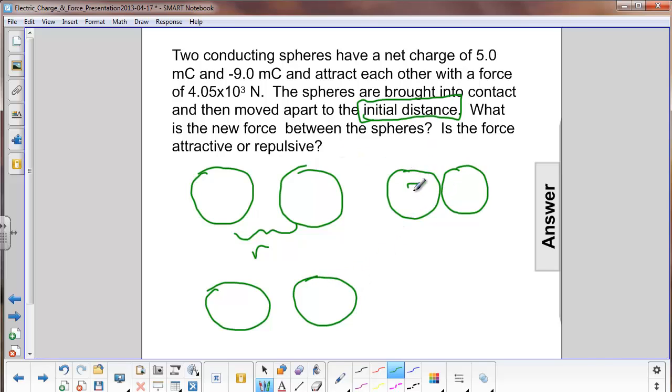This one had 5 millicoulombs. This had negative 9. When they're brought together and touched, these charges will distribute themselves evenly amongst the two spheres. So the total charge here is 5 minus 9, which is negative 4 millicoulombs. When they separate, each one will take away negative 2 millicoulombs.